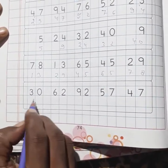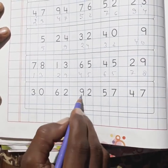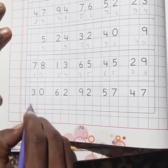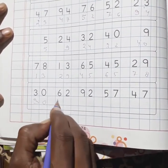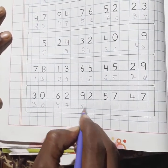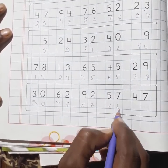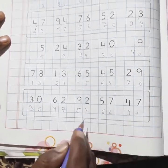Last question is 30, 62, 92, 57, and 47. Now write here 30, then 47, then 57, then 62, and the last 97.